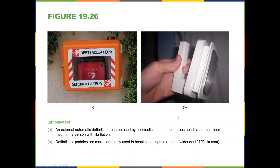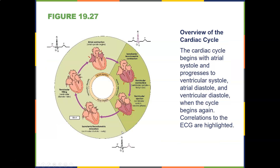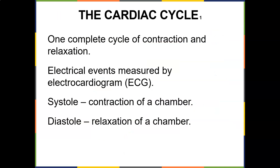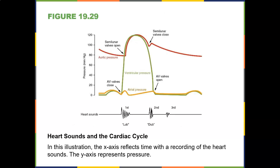A defibrillator — specifically an automated external defibrillator (AED) — can be used by non-medical personnel to re-establish a normal sinus rhythm in a person with fibrillation, whether atrial or ventricular. The cardiac cycle is one complete cycle of contraction and relaxation; electrical events are measured by the ECG, systole is the contraction of a chamber, and diastole is the relaxation of a chamber.